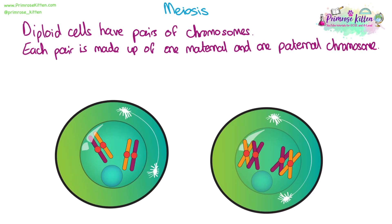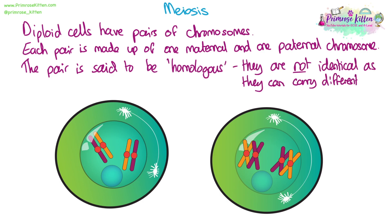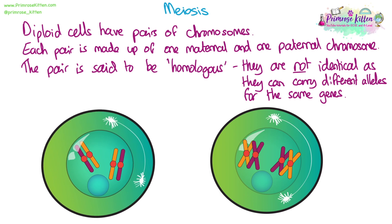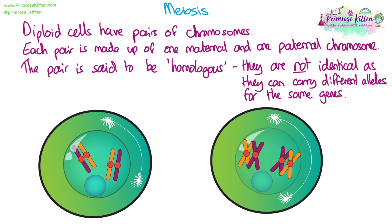Diploid cells have pairs of chromosomes — we have 23 pairs in each human cell. Each pair is made up of one paternal and one maternal chromosome, so one came from the sperm and one came from the egg. We call this pair a homologous pair. They're not identical copies because they came from two different parents and can carry different alleles. Although they carry the same genes, the alleles for those genes could be different. For example, the gene for hair colour — you could have a blonde hair allele on one chromosome and a brown hair allele on the other.